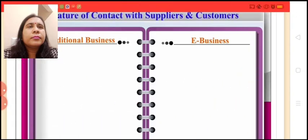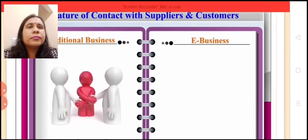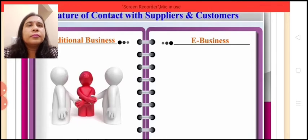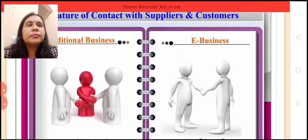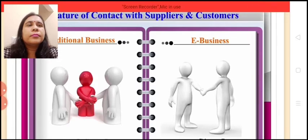Nature of contact with suppliers and customers: Traditional business involves indirect contact between supplier and customer through a chain of intermediaries. Whereas e-business involves direct contact between supplier and customer.